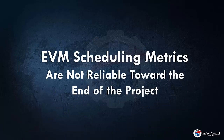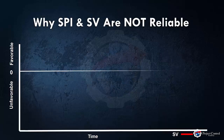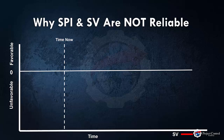Another issue with the EVM scheduling metrics is that they fail toward the end of the project. The schedule indicators initially appear to establish a trend at the beginning of the project, but at some point around two-thirds into the project, SPI and schedule variance begin to become really meaningless. Here is an example of the same project I showed you earlier, which is behind schedule. We want to evaluate what's going to happen at the end of this project — let's assume it is completed late according to what we see right now.